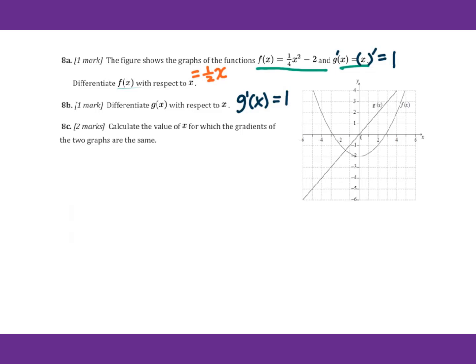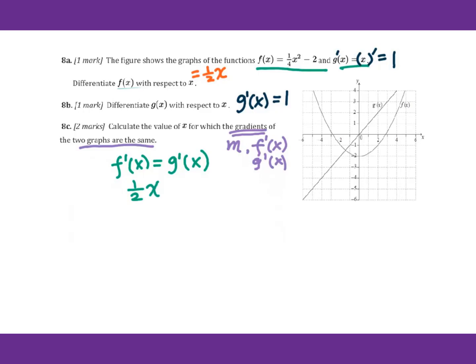For 8c, calculate the value of x for which the gradients of the two graphs are the same. When you talk about gradients — slope — it means f prime of x equals g prime of x. That is one half x equals 1. Multiply by 2 both sides: you will get x equals 2.